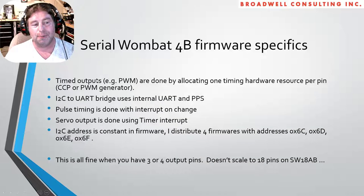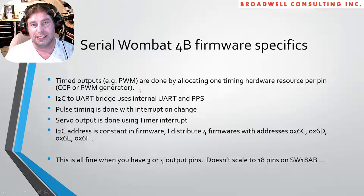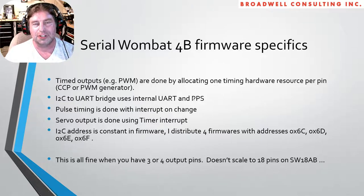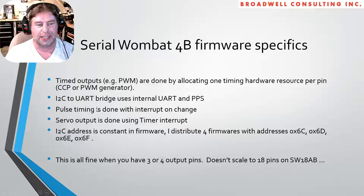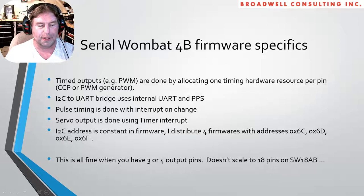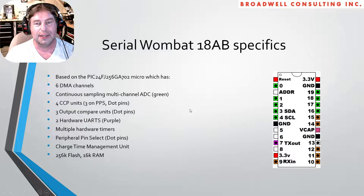This particular micro is fairly bad at indirect addressing — not good at array dereferencing, and things like pointer dereferencing used in the 18AB firmware are really problematic. So the Serial Wombat 4B firmware copies the contents of each state machine to a fixed address so that pin handlers can use direct addressing rather than indirect addressing, which greatly speeds up execution. Timed outputs like PWM are done by allocating one timer resource per pin. The I²C address is constant in firmware — that's why chips are sold in sets of four with addresses 0x6C, 0x6D, 0x6E, and 0x6F.